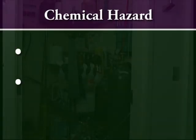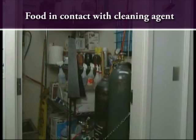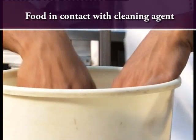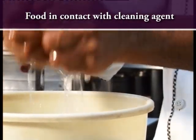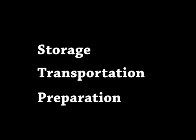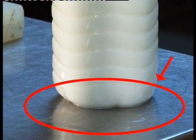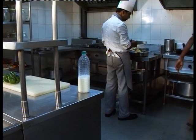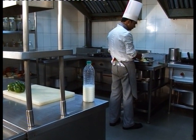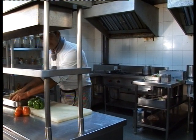Next is chemical hazards. Food can come into contact with cleaning agents or pesticides from fruit and vegetables. Chemicals may contaminate food by accidental addition during storage, transportation or preparation — either through carelessness or lack of knowledge. Chemicals used in food areas, such as cleaning agents, pose a risk to food safety, so it is important that they are used correctly.